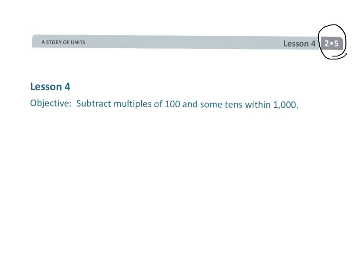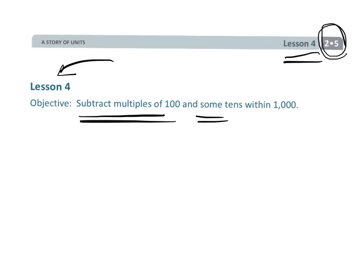All right, this is Grade 2, Module 5, Lesson 4. Just like lesson 3, where we were adding with the arrow method, this time we are going to be subtracting using the arrow method. Specifically, we're going to be subtracting multiples of 100 with some thrown-in 10s that we're going to include in our subtraction. So let's get started on this.